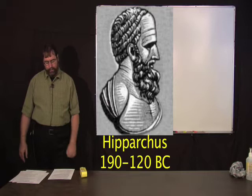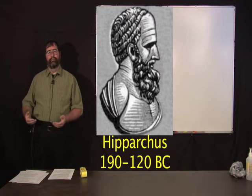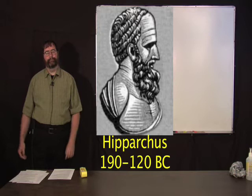Hipparchus, who lived from 190 to 120 B.C. He decided to divide the visible stars into six magnitudes, one being the brightest, six being the dimmest star that you could see with the naked eye.